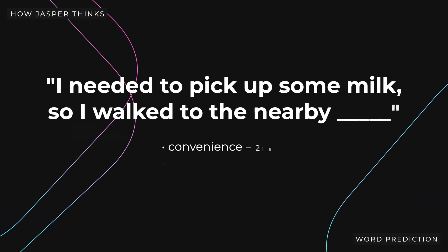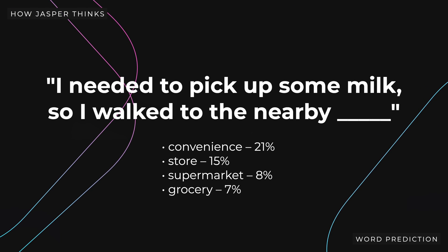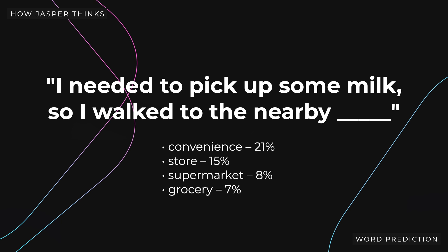His short list of words might look like this: Convenience, 21%. Store, 15% chance. Supermarket, 8%. Grocery, 7% chance. Depending on how we have trained Jasper, he will select one of those words. The higher chance assigned to the word, the more likely he is to choose it. So in this example, let's say Jasper chooses the word 'convenience' as the next word.